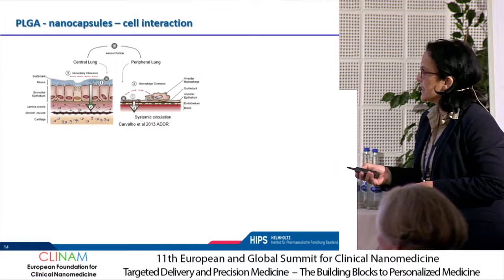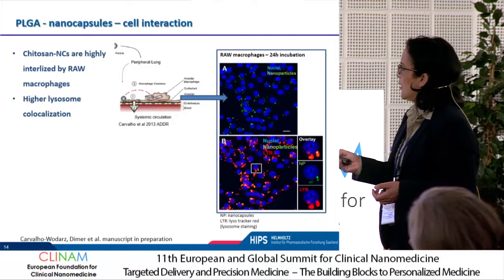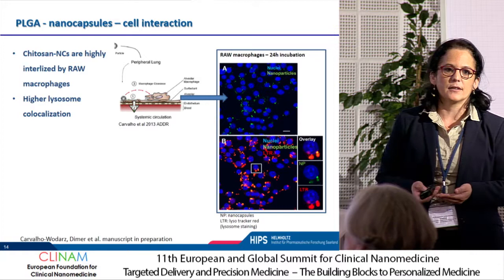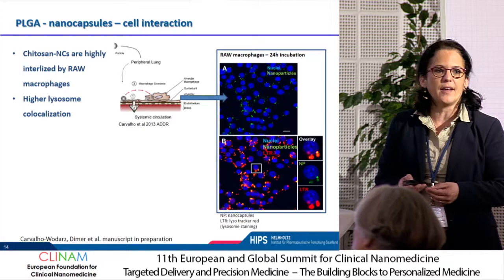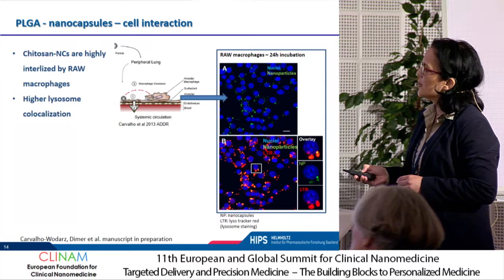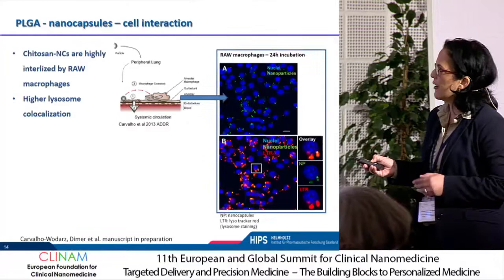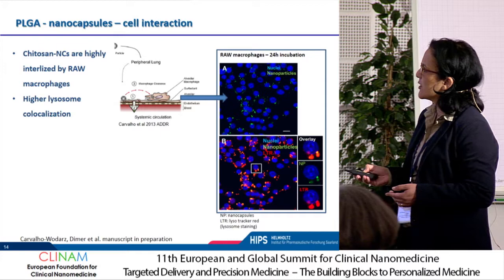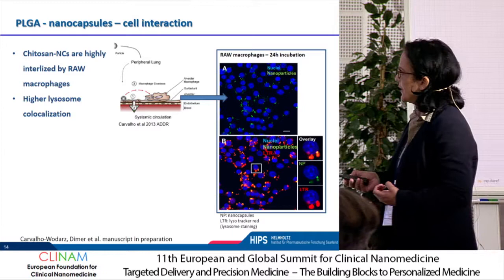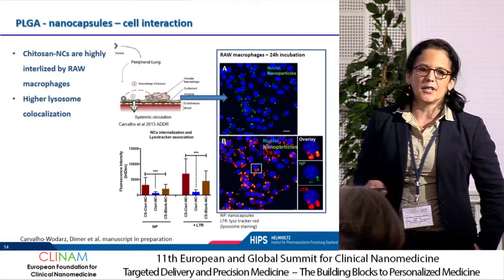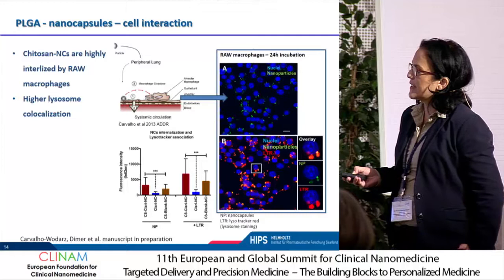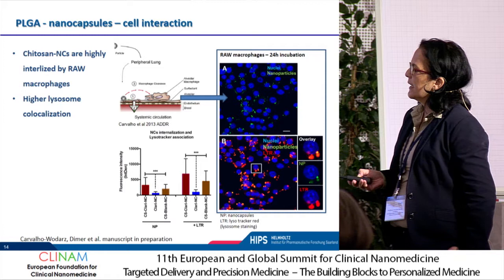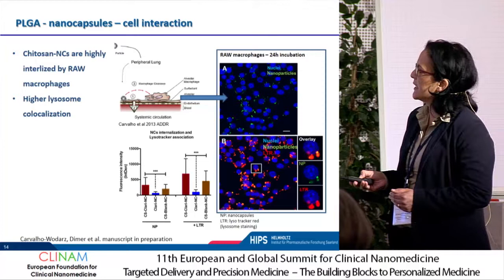Then we looked at macrophage uptake using a mouse macrophage model — RAW cells. You can see a high uptake inside the macrophage, and the channel for lysotracker labels lysosomes. Most of the particles are internalized and co-localize with lysosomes — they end up in this environment. Quantification using ImageJ shows nanoparticle uptake was higher for chitosan-coated compared to uncoated, and the chitosan-coated particles also show more co-localization with lysosomes.